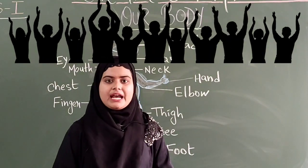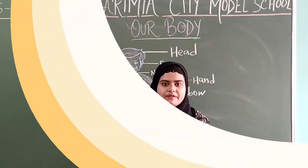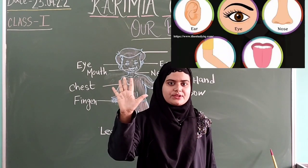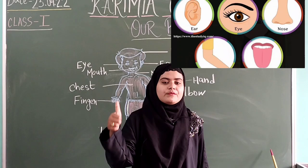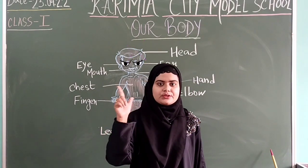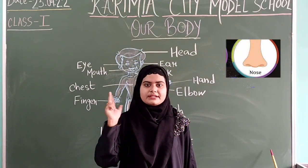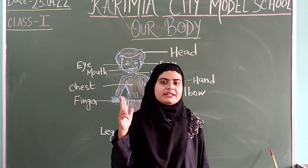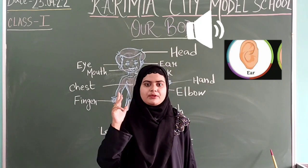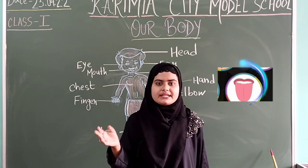Now we have sense organs. We have five sense organs. The first is eyes — with the help of our eyes we see the world around us. Second is nose — with the help of nose we smell things. Third is ear — with the help of ear we listen and hear things. The fourth sense organ is tongue — with the help of tongue we taste things.